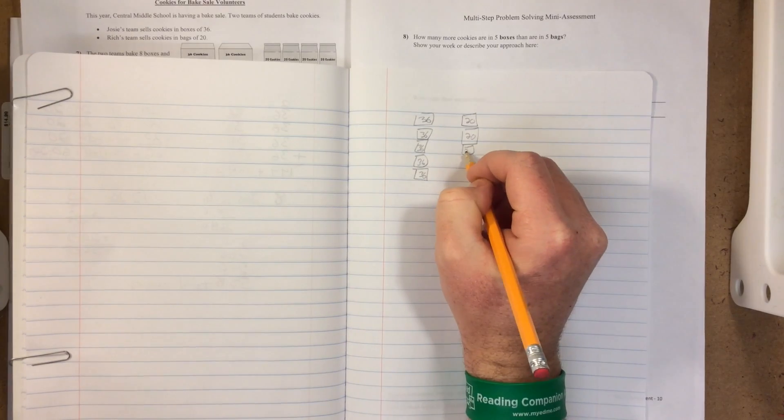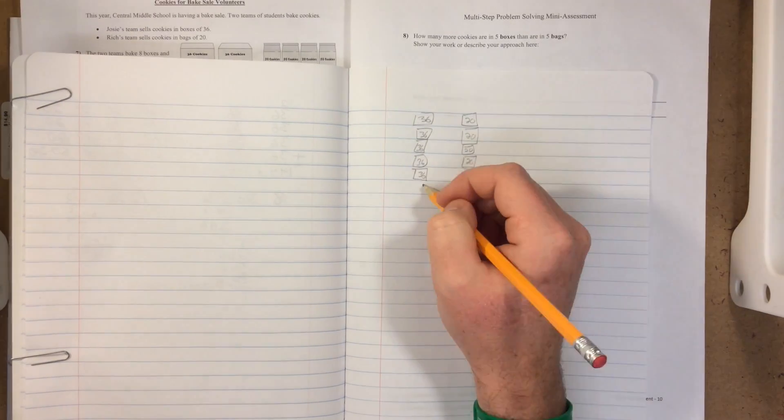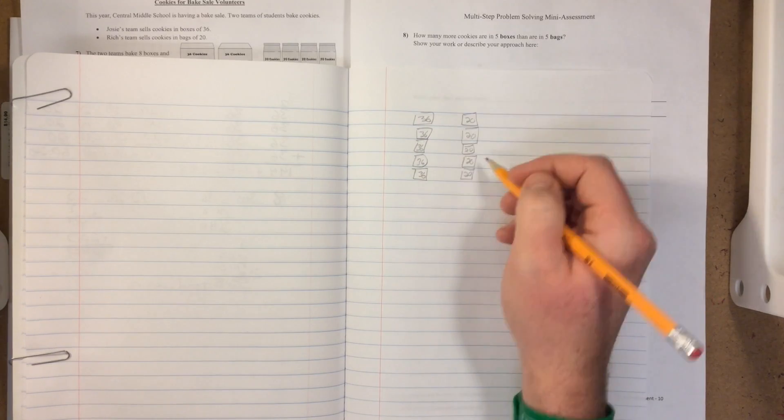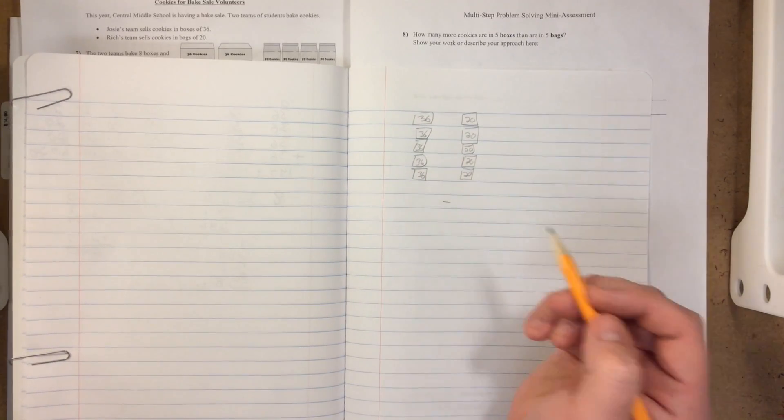What we're going to do is add all 36 then subtract all 20. So we will find the total here, the total here, and then subtract those totals.